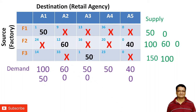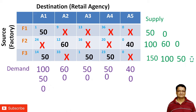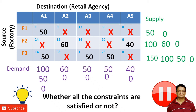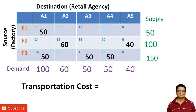Now there are only two cells remaining with supply of 100 and demand also of 100. We don't have many choices; we allocate the remaining units here, which fulfills both demand and supply. Here is a question for you: are all the constraints satisfied? Pause the video and try to answer.